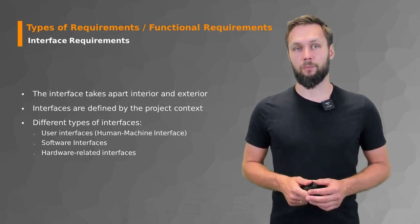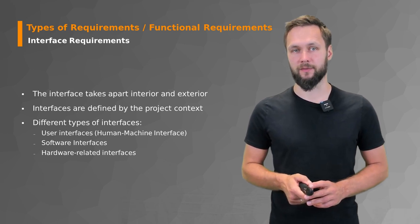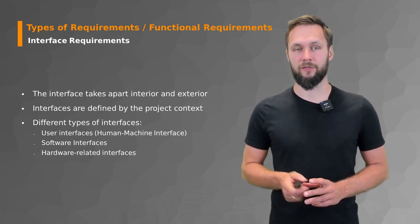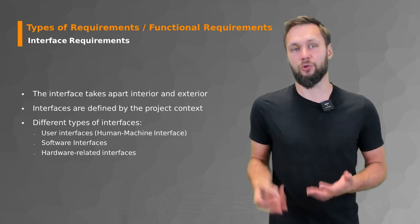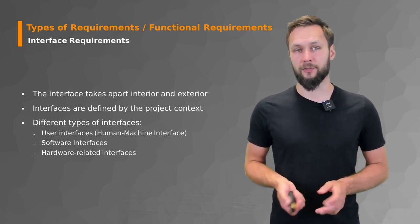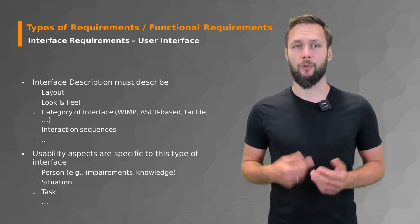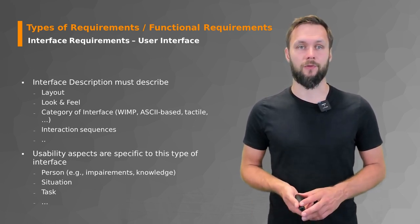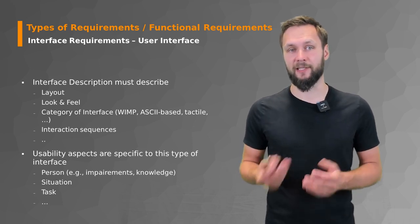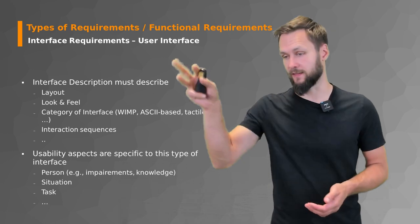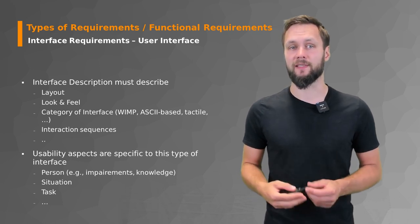Besides those perspectives, there is another type of requirements relevant for functional requirements: interface requirements. Recall from previous topics that we talked about interfaces between the system and the system context, and you need requirements for those too. There are different types of interfaces: user interfaces, software interfaces, and hardware-related interfaces. For user interfaces, you describe the layout, look and feel, category of interfaces, and interaction sequences — for example, if I click on a button, this happens and it looks like this. This is very important in the context of usability.